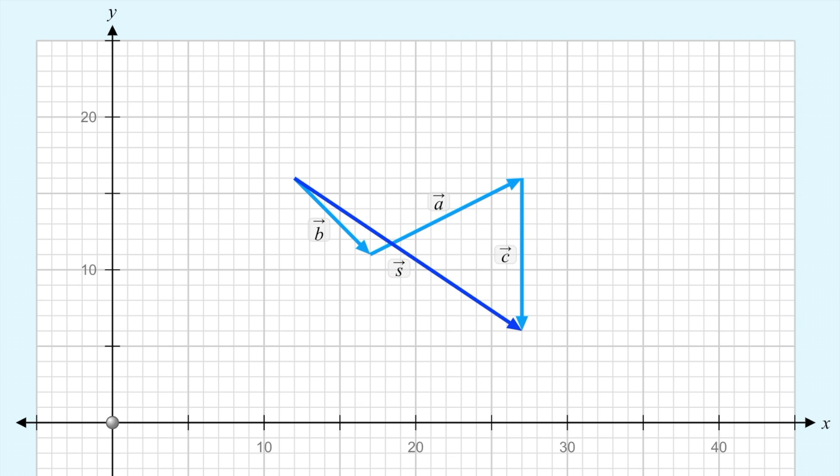So that's vector addition with multiple vectors. Applying the tip-to-tail method shows that it's essentially the same process as adding two vectors. But what about if we introduce subtraction?